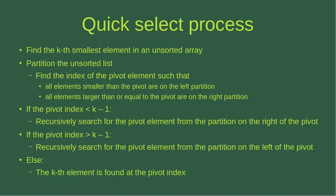The gist of the quick select process is the partitioning of the unsorted list. The partitioning is done according to the following major principles. We need to find out the index of the pivot element so that all elements smaller than the pivot are on the left partition, and all elements larger than or equal to the pivot are on the right partition.